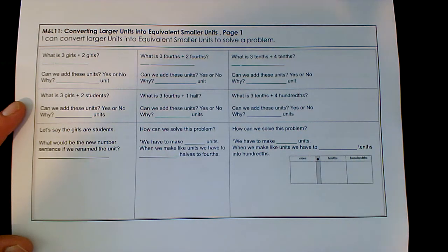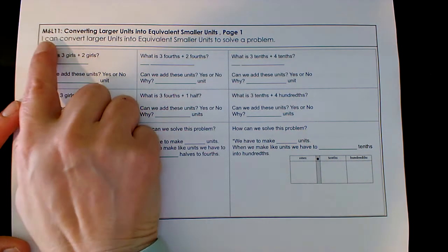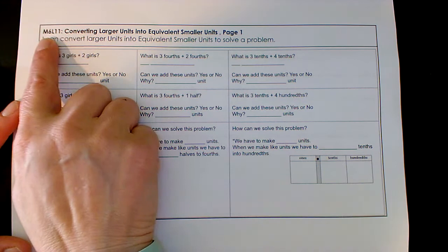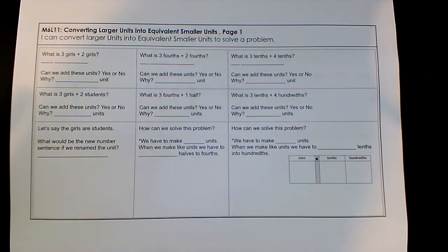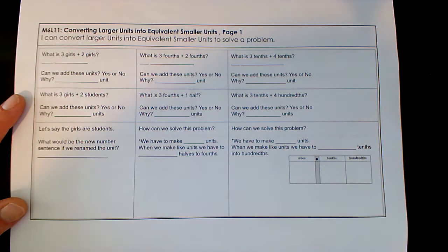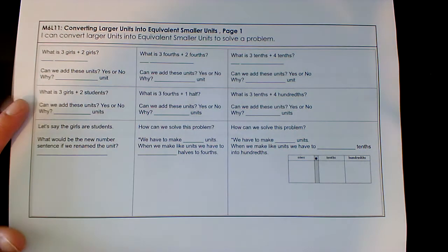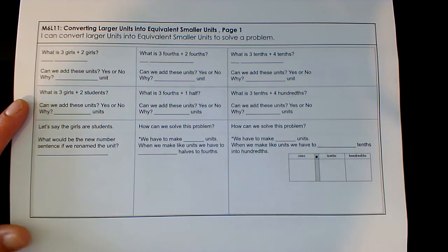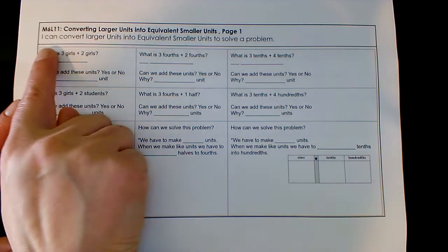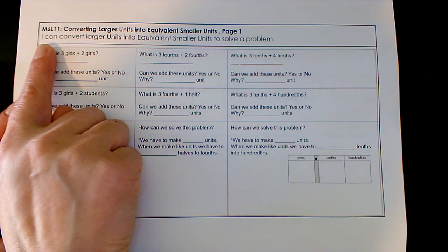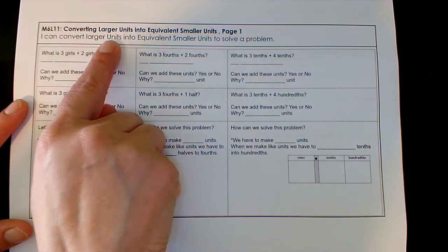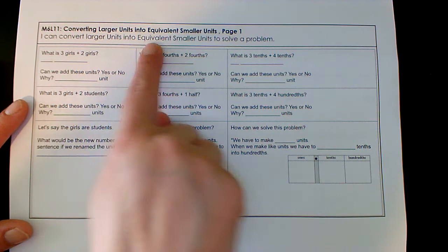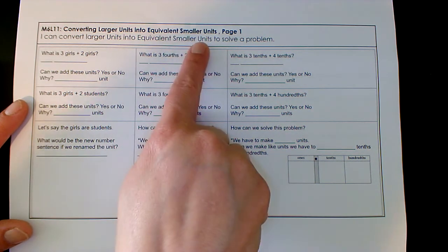All right, fourth grade, it's Mrs. Boswell, and today we're doing module 6, lesson 12. I know this says 11, but it's really 12, and it says converting larger units into equivalent smaller units. Today's objective is: I can convert larger units into equivalent smaller units to solve a problem.